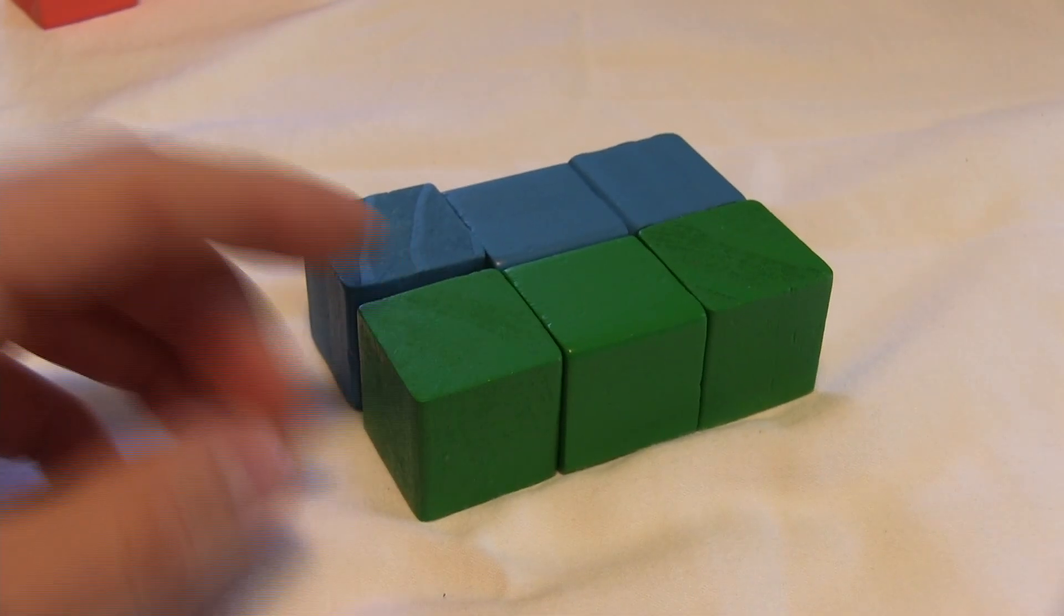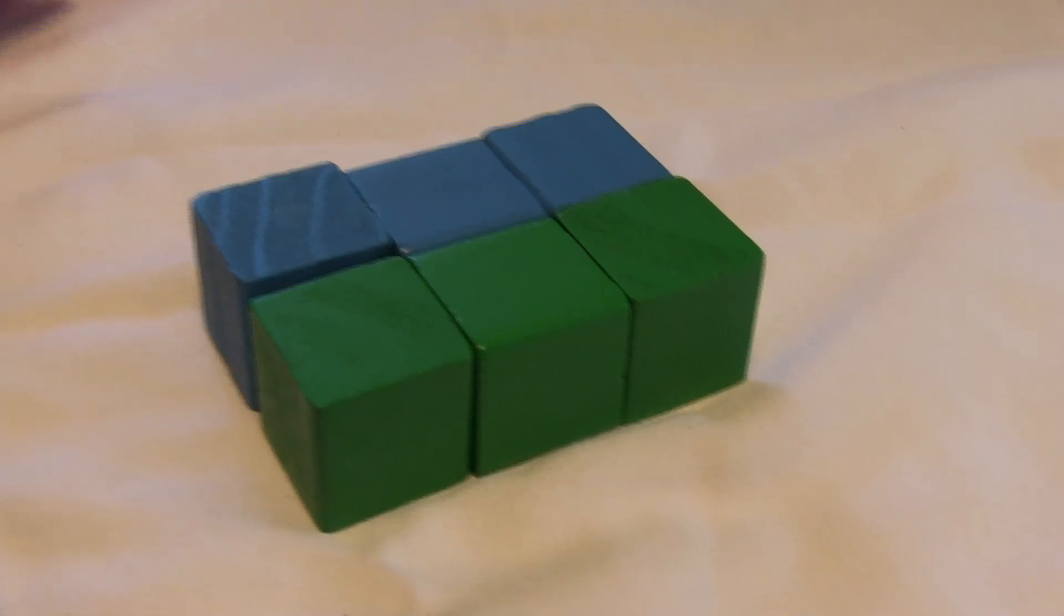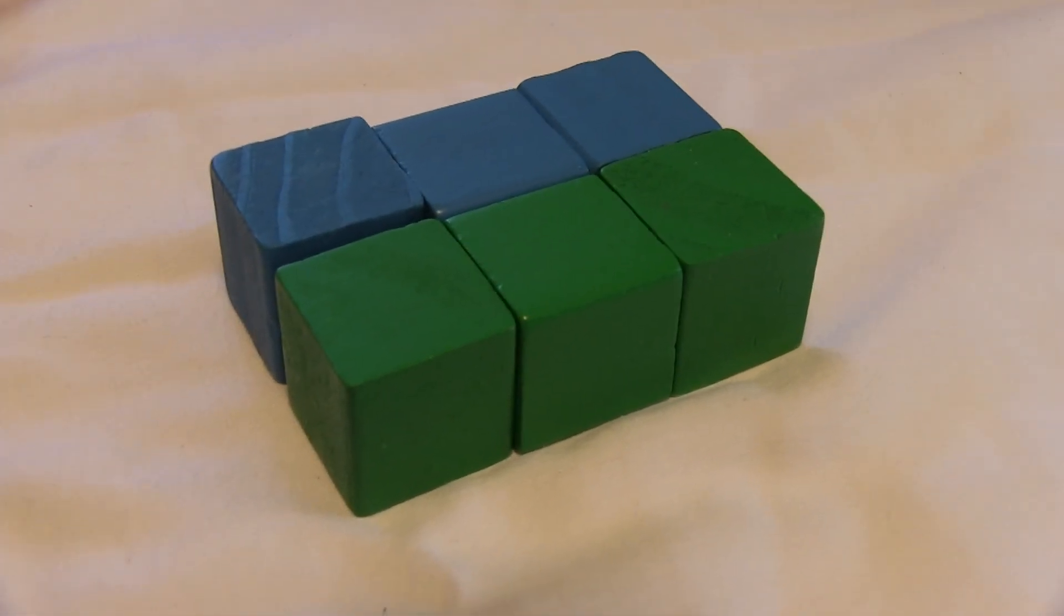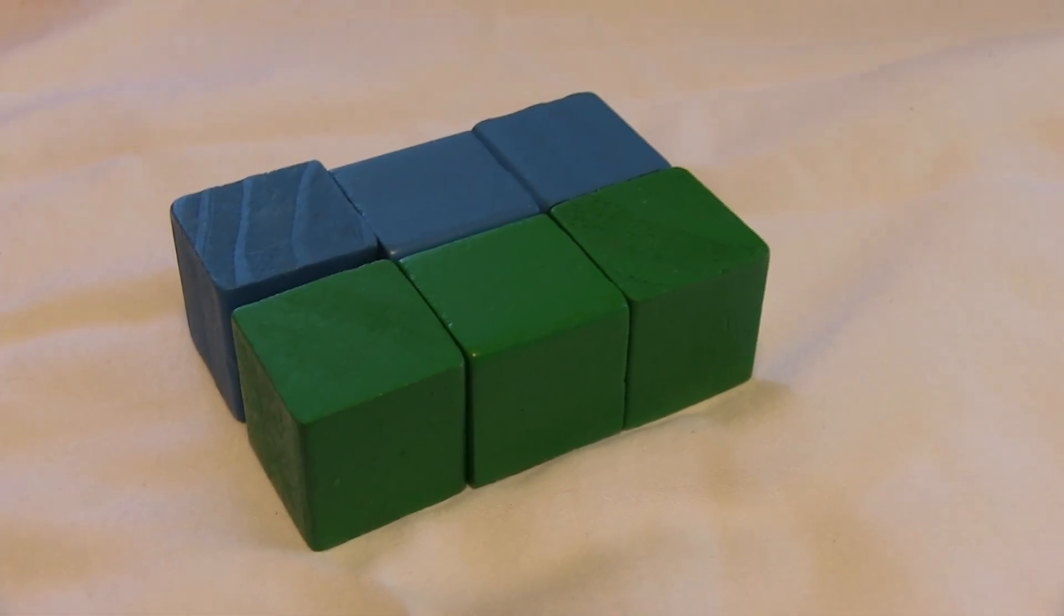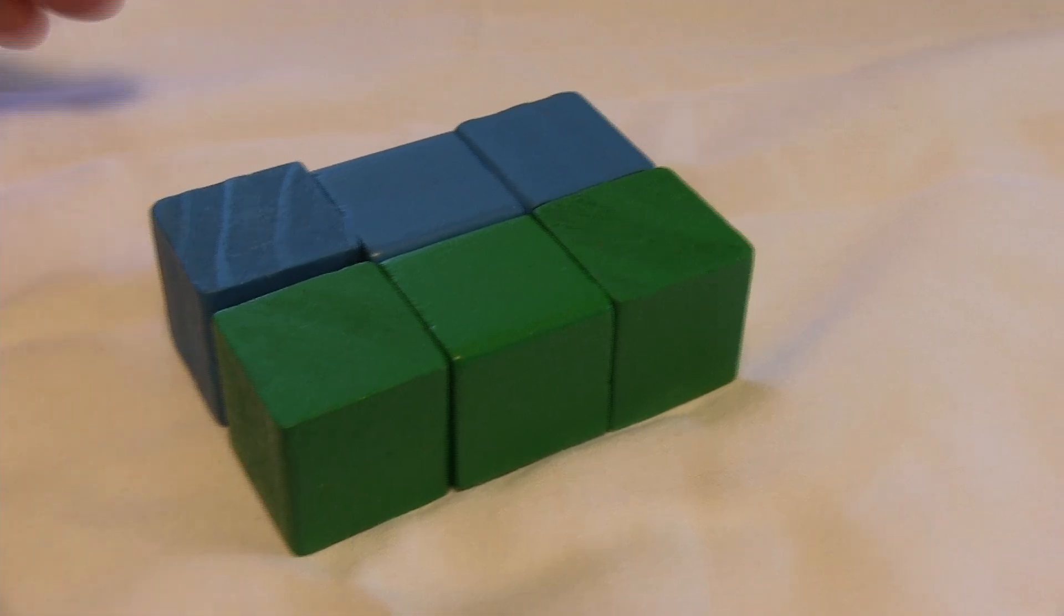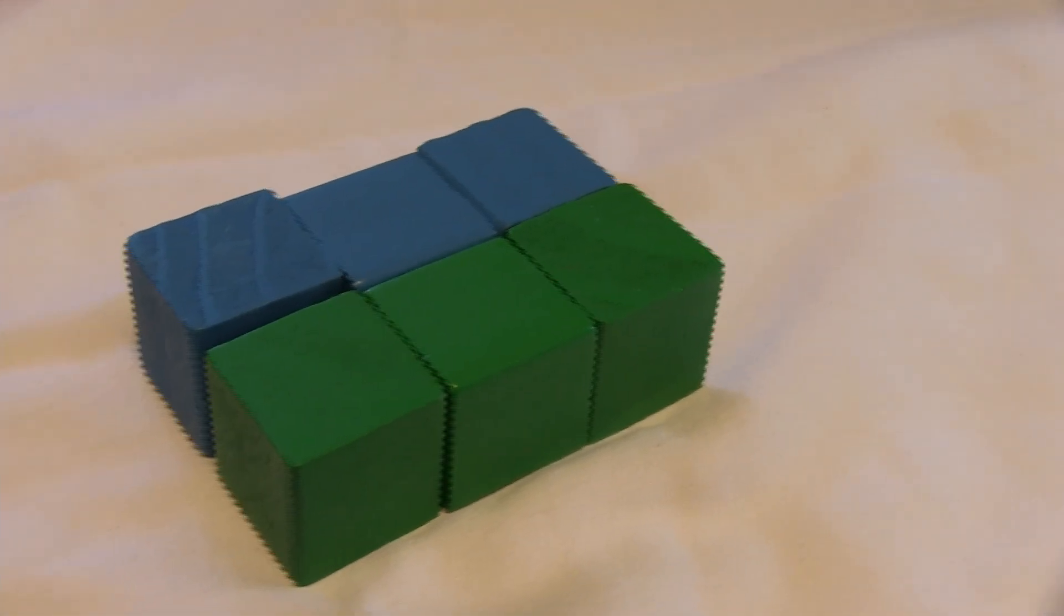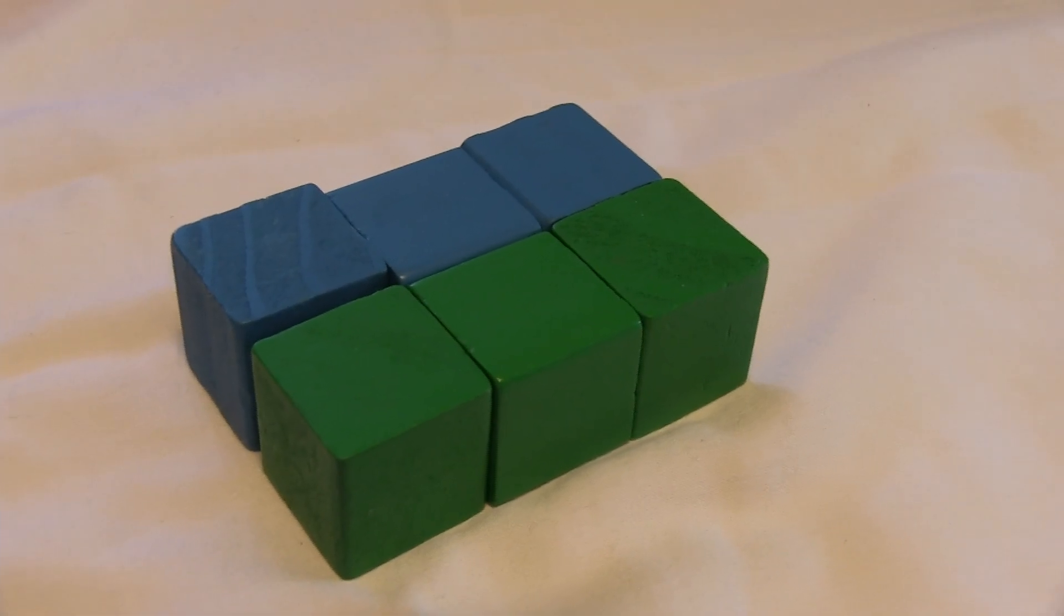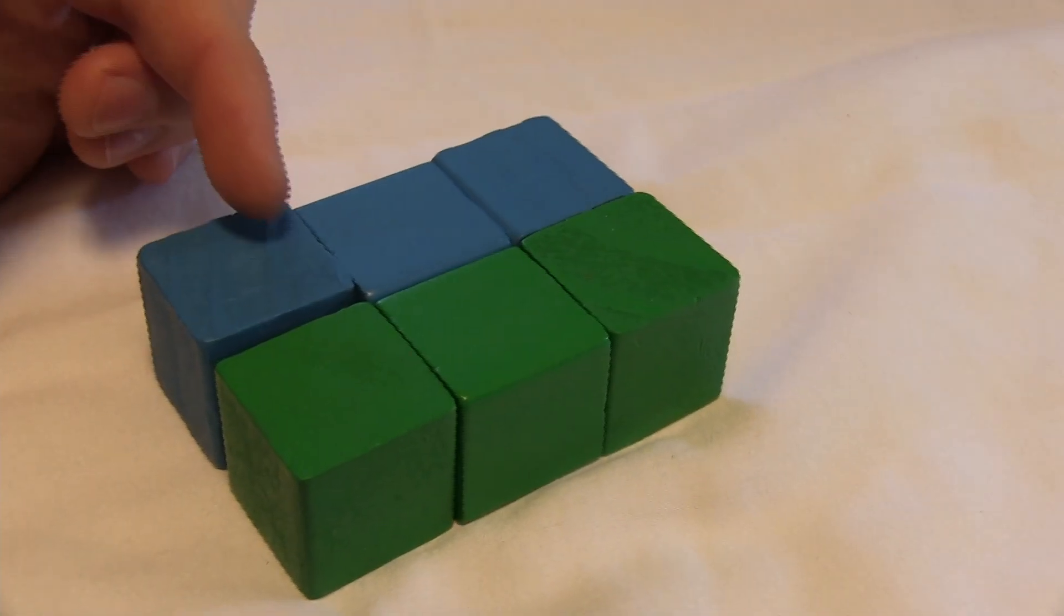So we need to figure out how many cubes total there are in this solid figure here. Now, the great thing is there are multiple ways that we can do this. One is by addition. We can simply count how many we see right here, and we could count a few different ways.